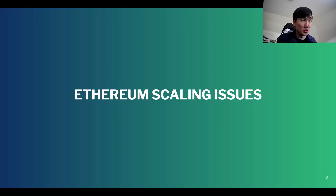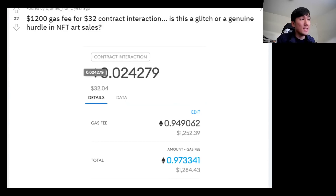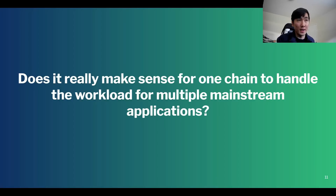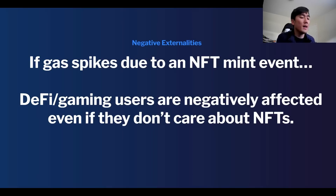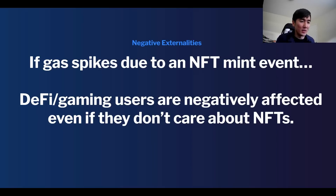The problem this industry is facing right now is due to Ethereum scaling issues, and this is applicable to most EVM chains. Ethereum gas fees are very high. There are negative externalities that come from how the EVM is designed because right now everything on Ethereum is done on the Ethereum L1. Maybe with rollups and scaling solutions the L1 can just be the settlement layer, but in the short term the question is: does it really make sense for one chain to handle the workload for multiple mainstream applications? For example, NFT mints in early 2021 — every day there was an NFT mint and people were spamming transactions, causing gas to spike into the low four figures.